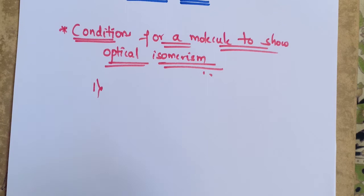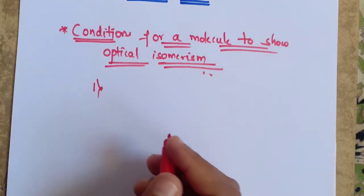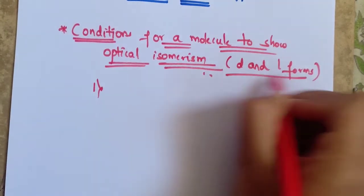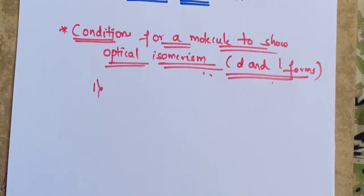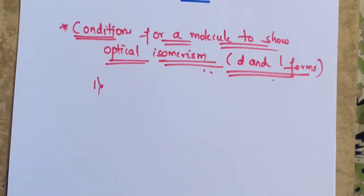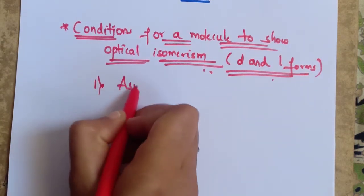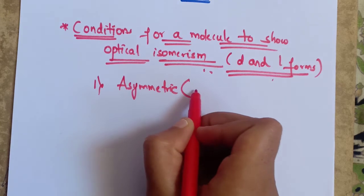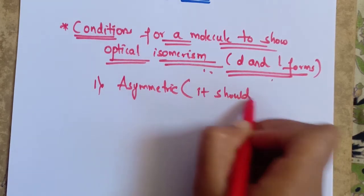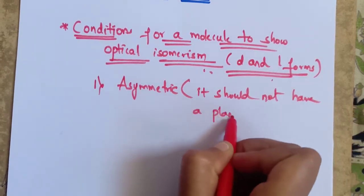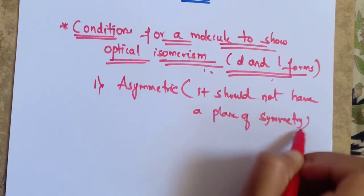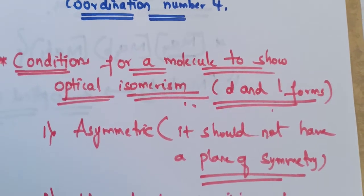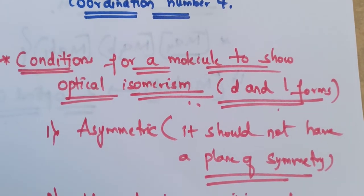Here are the important conditions for a molecule to show optical isomerism. The most necessary and sufficient conditions for a molecule to show optical isomerism — that means to exist in the D and L forms — are as follows. First, the molecule should be asymmetric. That means a molecule should not have a plane of symmetry. Asymmetric means the groups around the central metal ion should be different. In tetrahedral complexes, four different ligands should be different around the central metal ion.